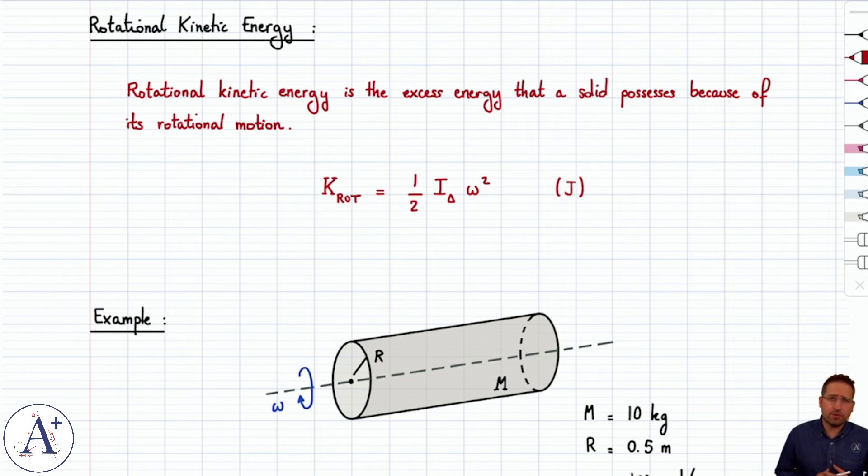When we discussed kinetic energy before, we discussed it in the context of linear motion. Therefore, we had kinetic energy equal to ½mv², sometimes referred to as linear kinetic energy or translational kinetic energy. That kinetic energy describes the excess energy an object possesses because of its linear motion.